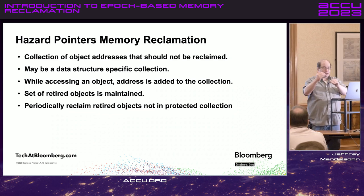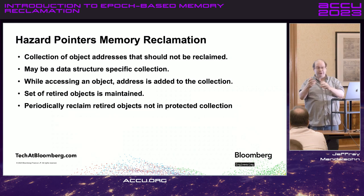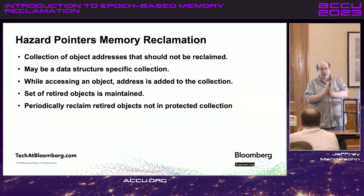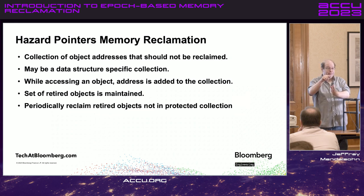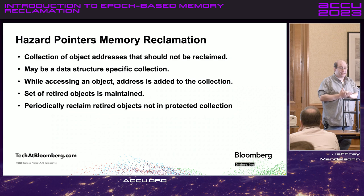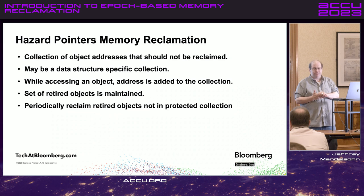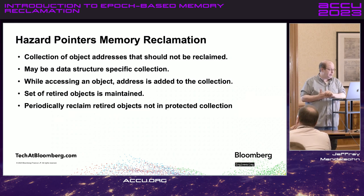As I access an object, I put its address into the hazard pointer list. As I want to retire things, I put them into a list of things I want to reclaim. But before reclaiming, I check that set versus the set of things I can't reclaim. Anything not in that protected set I can go ahead and reclaim; everything else has to wait. It sounds a little complicated, but it's actually not.